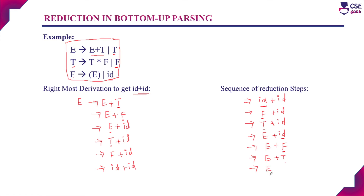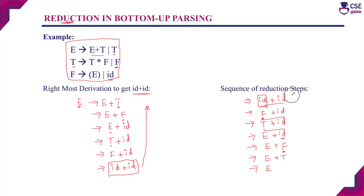We have now reached the start symbol of the grammar. In bottom-up parsing, we identify a string or substring that matches the right-hand side of a production and replace it with the left-hand side variable. This process is implemented in every step of bottom-up parsing, and this technique is nothing but the reverse of rightmost derivation. Rightmost derivation starts with the start symbol to derive the input string, while bottom-up parsing starts with the input string and proceeds until it derives the start symbol.